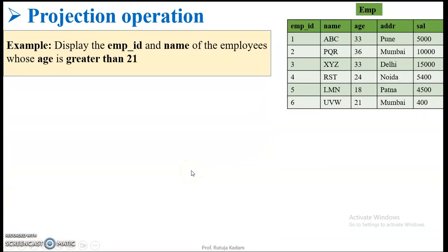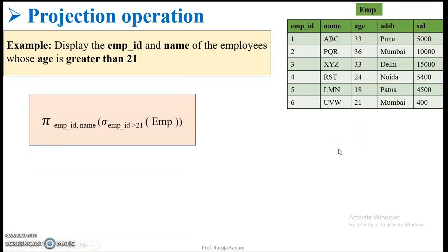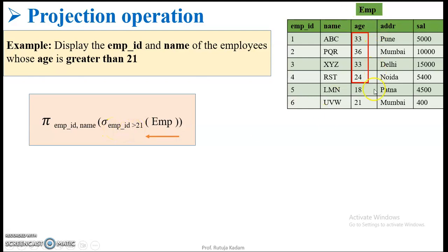The third example: I want to display the employee ID and name of employees whose age is greater than 21. For this, I have to combine selection as well as projection operation, where sigma (row) stands for selection. First, we find which employees have age greater than 21 — these are four employees. We parse the query from right to left, first performing the selection operation to identify which employees have age greater than 21.